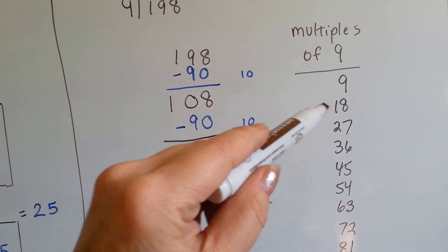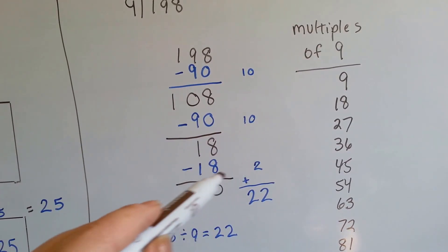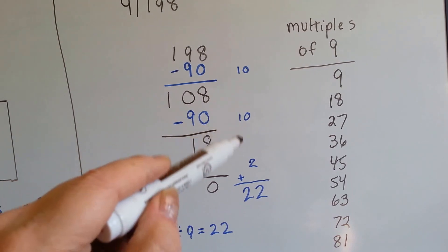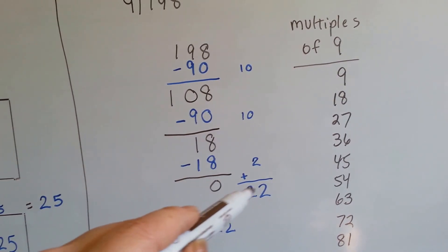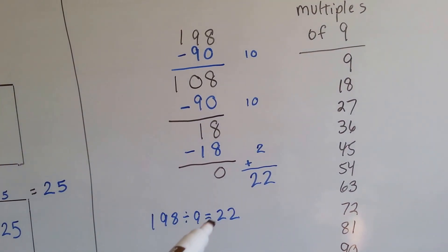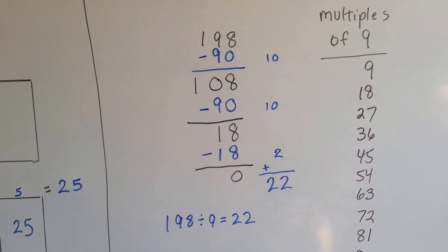18 is a multiple of 9. That's a 2. We take that away and get 0. We add the 10, the 10, and the 2. That's 22. And we know that 198 divided by 9 equals 22. See how we got that?